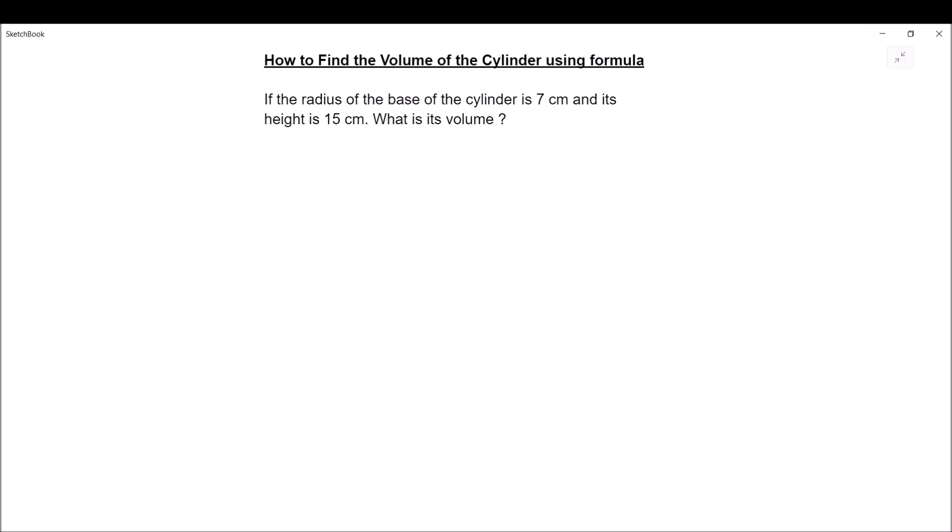So let us first draw a cylinder. The height of the cylinder is given as 15 cm and the radius of the base of the cylinder, which is r, is given as 7 cm.